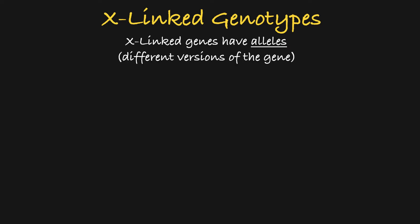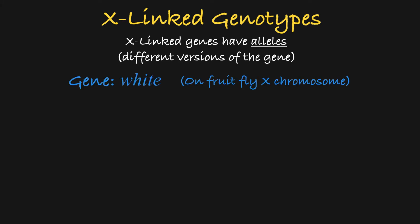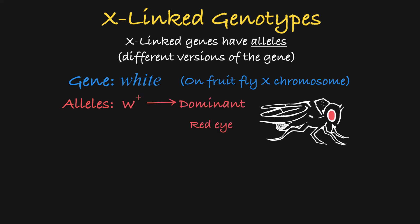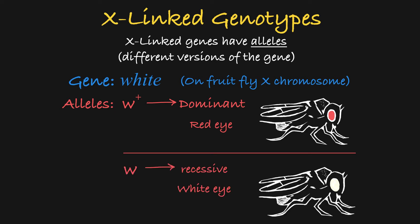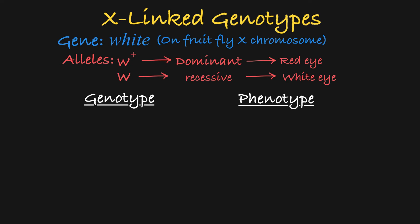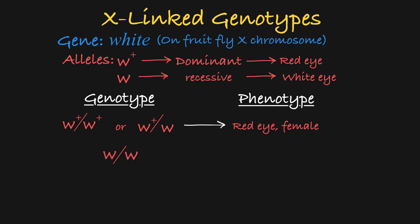X-linked genes are just like autosomal genes in that they can have different alleles. For example, in fruit flies, the white gene has two alleles. The dominant W-plus allele leads to a red eye phenotype in the fly, while the recessive W-allele leads to the white eye phenotype. So females that are homozygous W-plus or heterozygous will have red eyes, while females that are homozygous for the recessive W-allele will have white eyes.